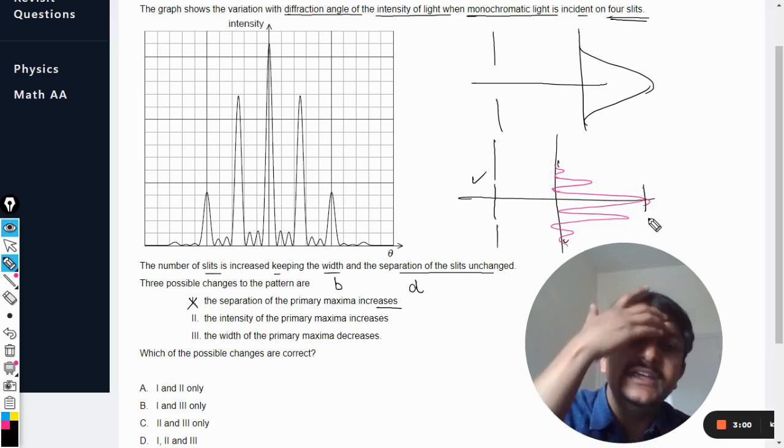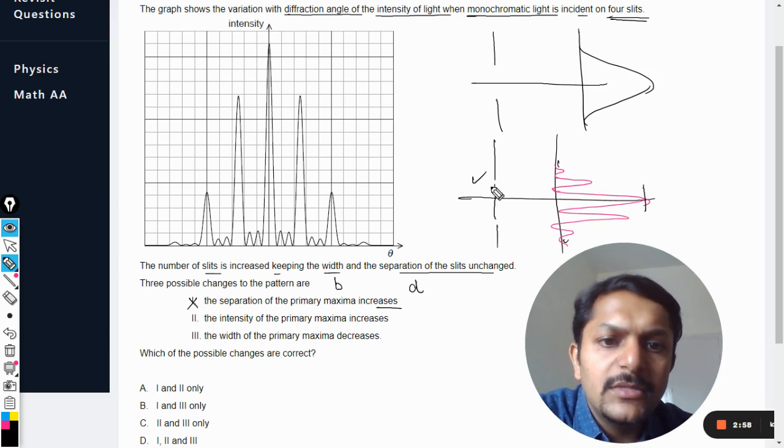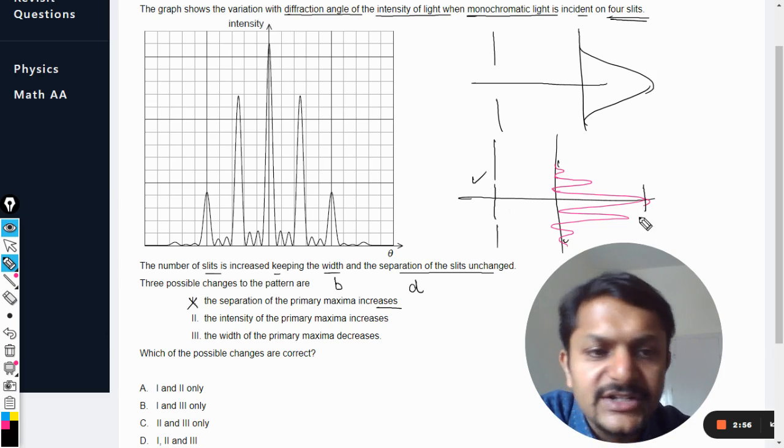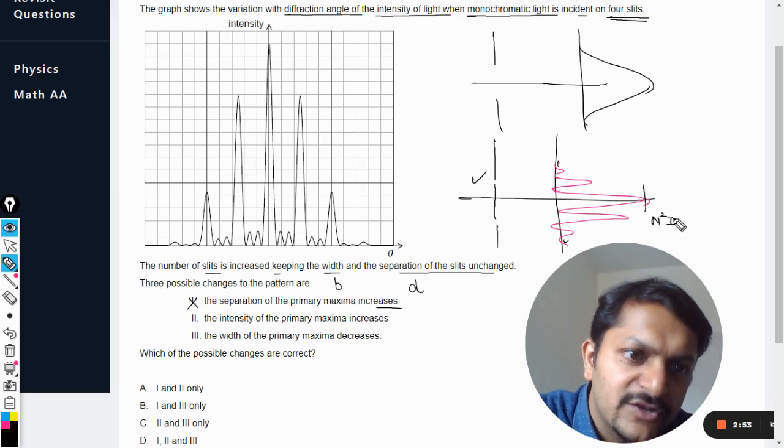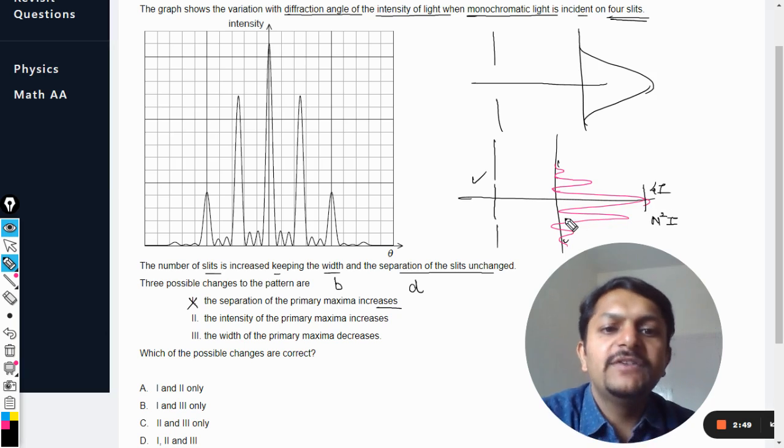So what happens now is, and also this intensity is basically, like there are two slits, so it is directly proportional to n square, or it is equal to n square I₀.